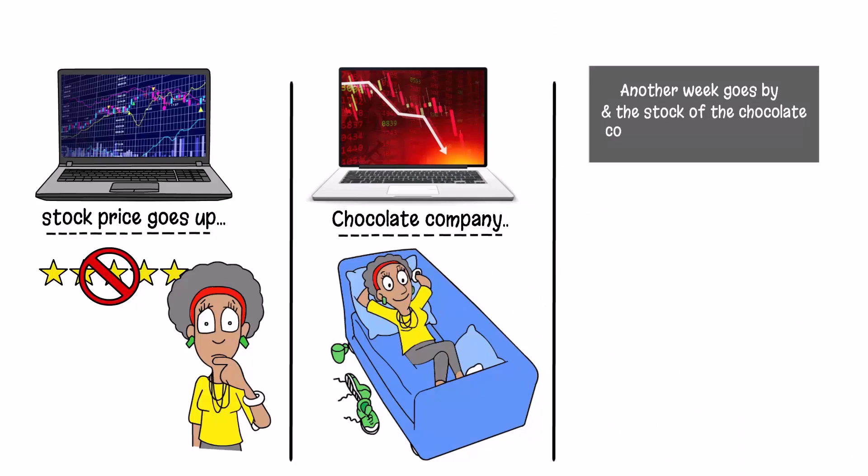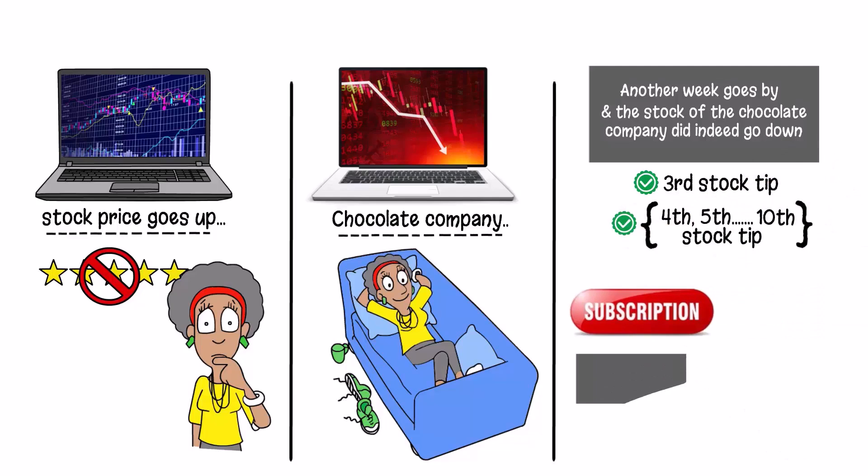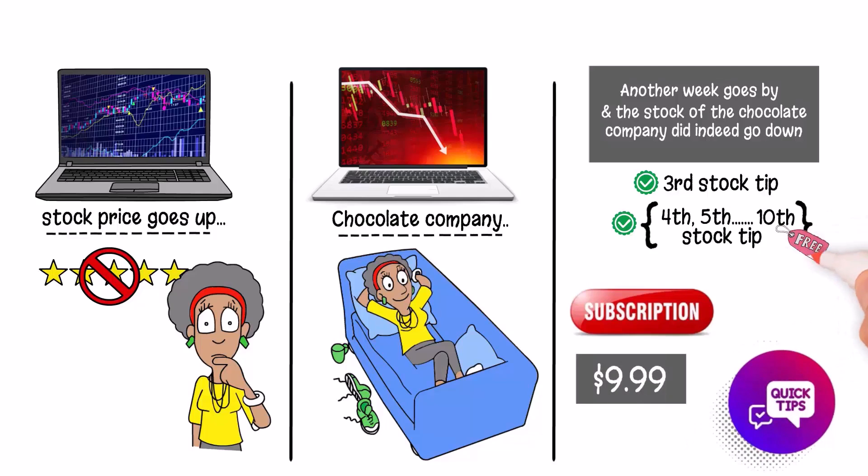At the same time you get the third stock tip, also correct, then the fourth, a fifth, and so on until you get the 10th stock pick, which comes with a subscription proposal of $9.99 a week to receive stock picks every week from now on. The 10th would be the last one for free.